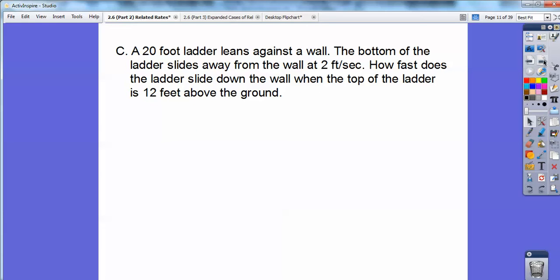All right, so here we go. Here's our 20-foot ladder. It leans against the wall, and the bottom of the ladder slides away from the wall at 2 feet per second. How fast does the ladder slide down the wall when the top of the ladder is 12 feet above the ground?